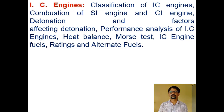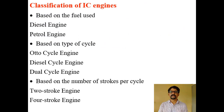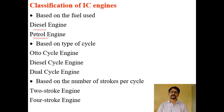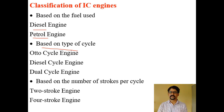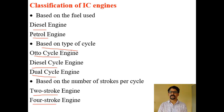Now, the classification of IC engines. The classification is based on different bases. First, based on the fuel used: you have diesel engines and petrol engines, and also gas engines. Based on the working cycle: Otto cycle engine (petrol engine), diesel cycle engine, and dual cycle engine. Based on the number of strokes per cycle: two-stroke engine and four-stroke engine.